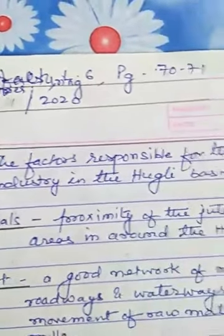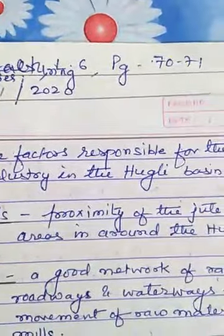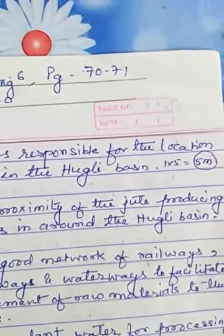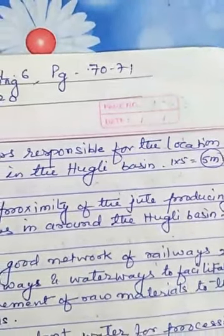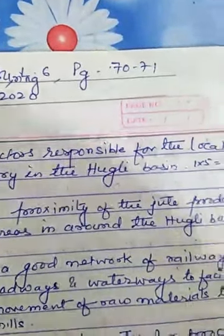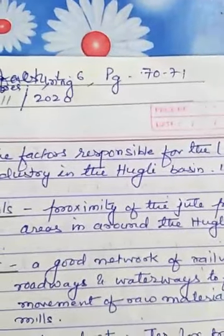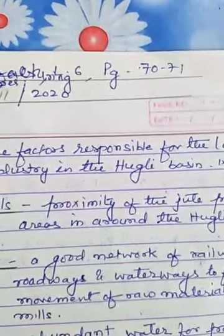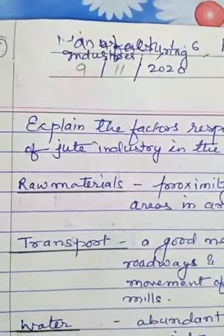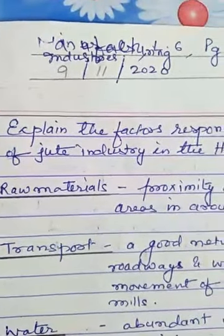First, write raw materials. Proximity of the jute producing areas is in and around the Hooghly Basin region — that is in Hooghly, Haura, Kolkata surrounding areas, suburban areas, and the Sundarban Delta region. These are all famous for the production of jute which is required by jute industries.